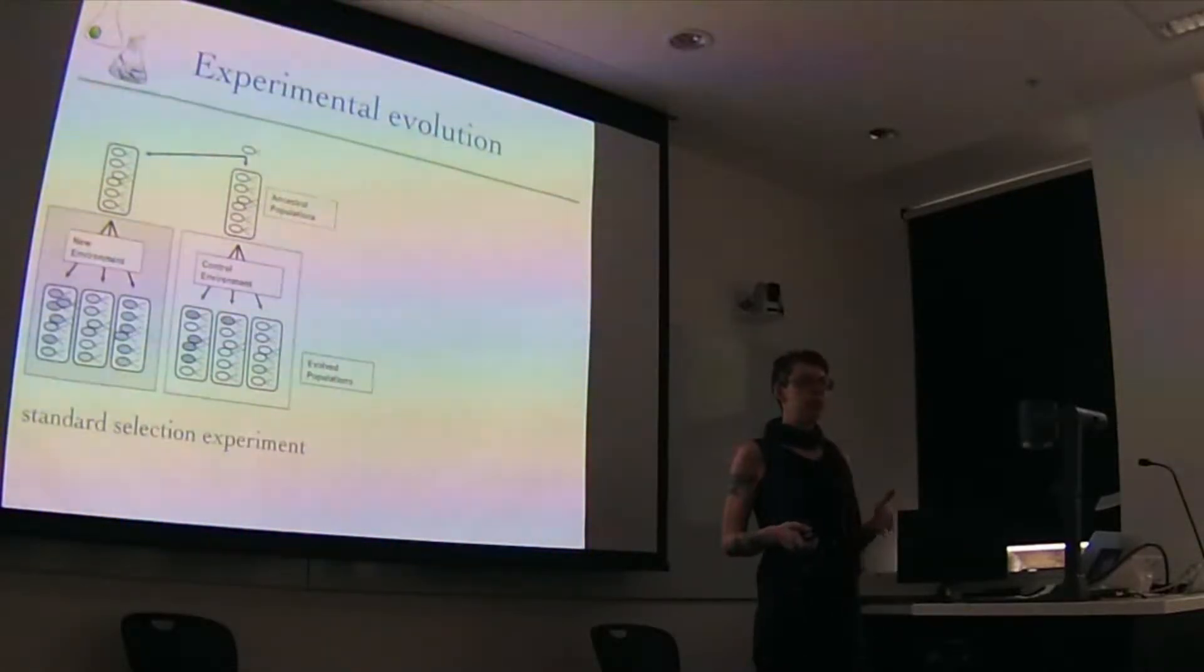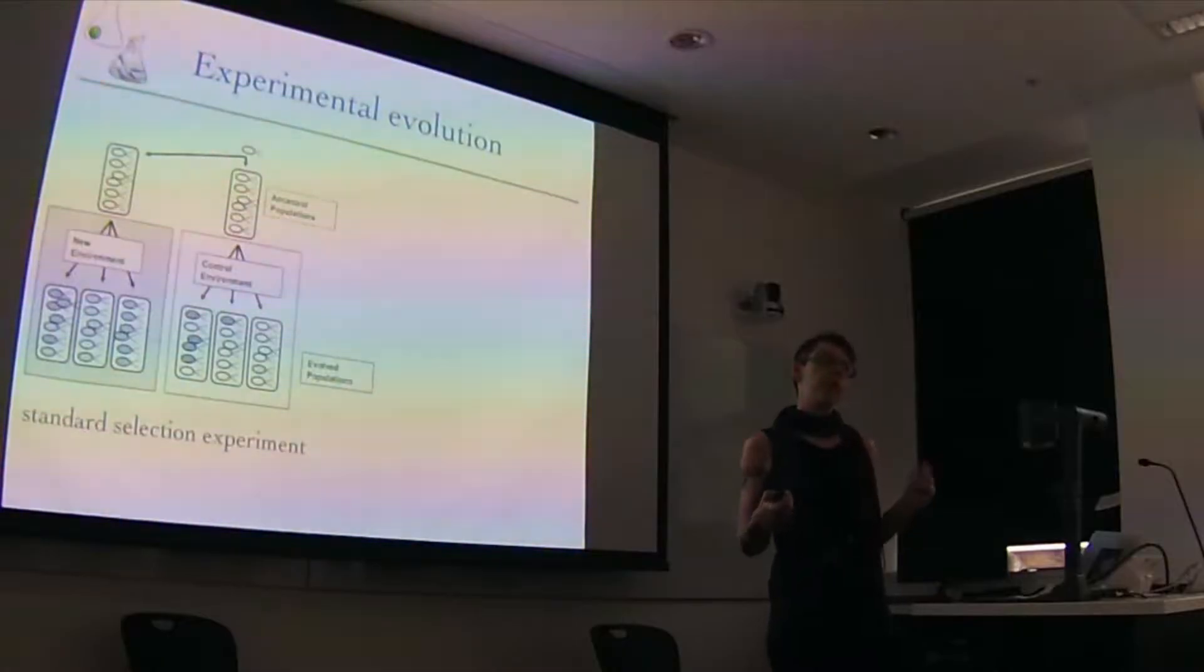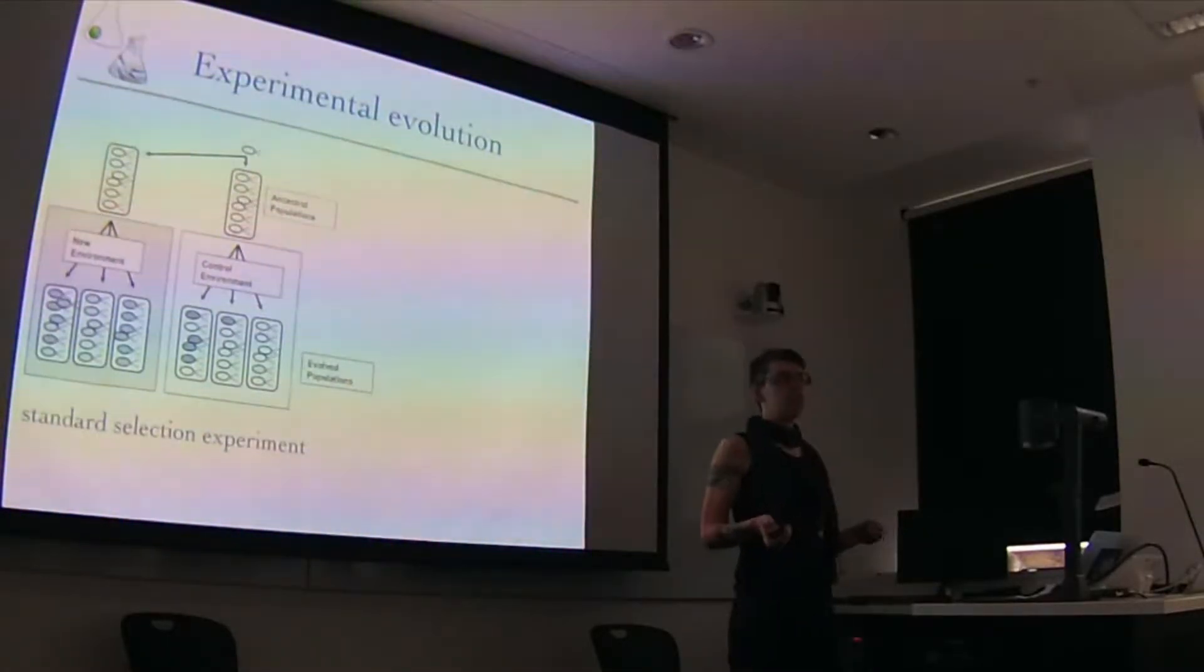So with experimental evolution or evolution experiments, you're basically watching evolution in real time. If you're going to watch evolution in real time, you need things that are going to evolve over the course of preferably a single PhD or grant cycle. So microbes are great. People also use fruit flies, and if they're extra crazy they use guppies, but they'll get you a free trip to Trinidad.